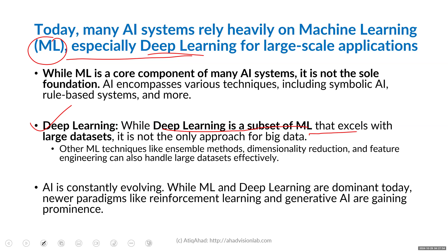While deep learning is a subset of machine learning that excels with large datasets, it's not the only approach for big data. As artificial intelligence is constantly evolving, these machine learning and deep learning dominant methodologies may change in the future and new approaches may emerge.